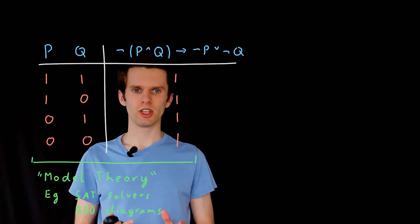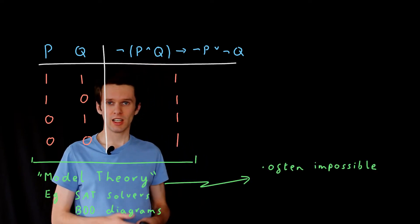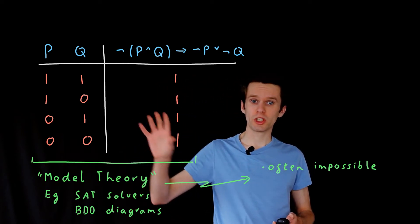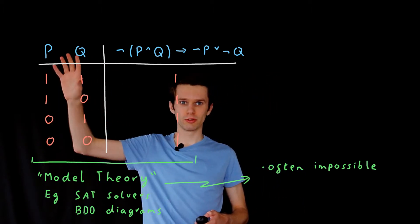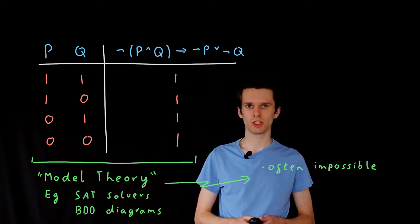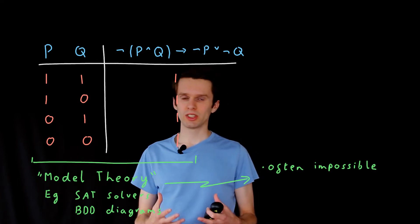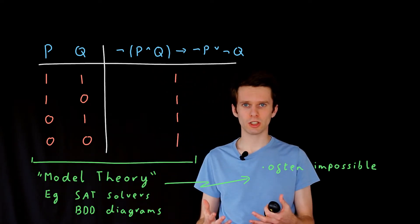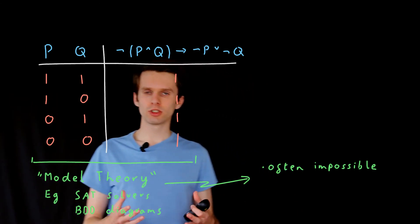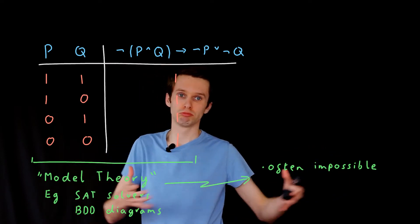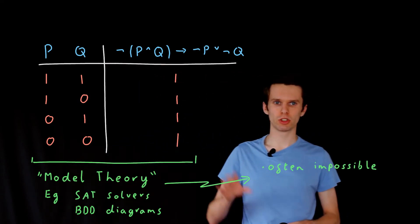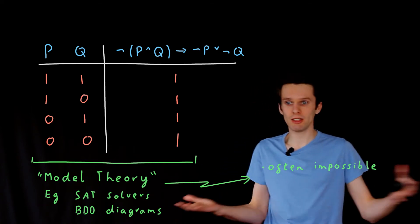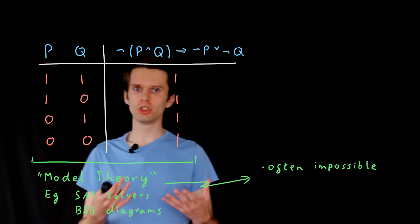But there are some fundamental problems with using model theory. The most prominent one is that it's often impossible. For propositional logic we can check every combination of true and false for all the symbols in the proposition we're trying to check. But in many logics we simply cannot do this. The next logic up — predicate logic or first-order logic — allows us to reason about infinite sets, for example the natural numbers. If we want to show that some property holds about each natural number, we cannot possibly test every single number; we would need an infinite amount of time.